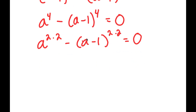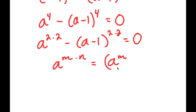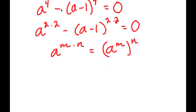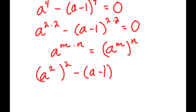The reason I did this is because if I have something in the form a to the power of m times n, this is equal to a to the power of m to the power of n. So a to the power of 2 times 2, I can rewrite that as a to the power of 2 to the power of 2. And a minus 1 to the power of 2 times 2, I can rewrite this as a minus 1 to the power of 2 to the power of 2, and this is equal to 0.